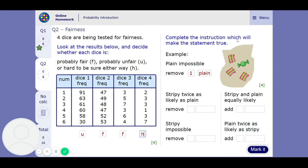So, complete the instruction which will make the statement true. Plain impossible. Well, we've got to remove one plain. So if you remove one plain sweet, you're left with all stripy sweets. Stripy twice as likely as plain. Well, we've got to remove one stripy sweet. Because if we remove one stripy sweet, there will be two stripy, one plain, twice as many stripy.